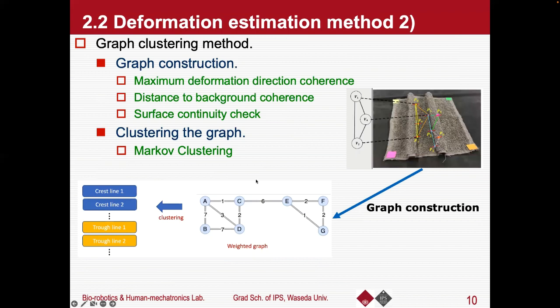Our graph clustering method will construct a weighted graph based on the set of 3D feature points we have obtained. Through two coherences and one continuity checking, the weights between each node in the graph represent the possibility that two 3D feature points belong to the same crest-line or trough-line, and then the Markov clustering method is applied to get each crest-line and trough-line.